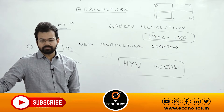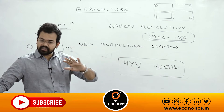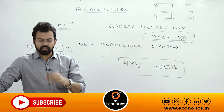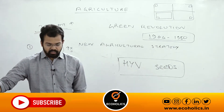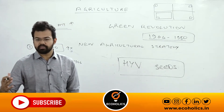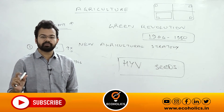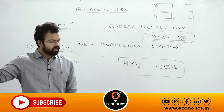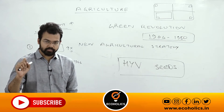Let's understand regional variation of crops with an example related to MSP — which we will discuss in detail later. Whenever the government announces MSP for one particular crop like wheat and rice, more and more farmers become interested in sowing that particular crop.